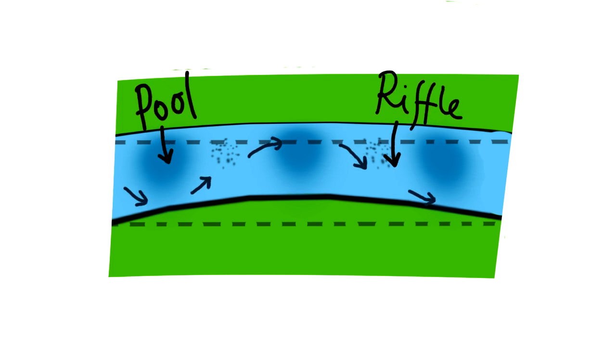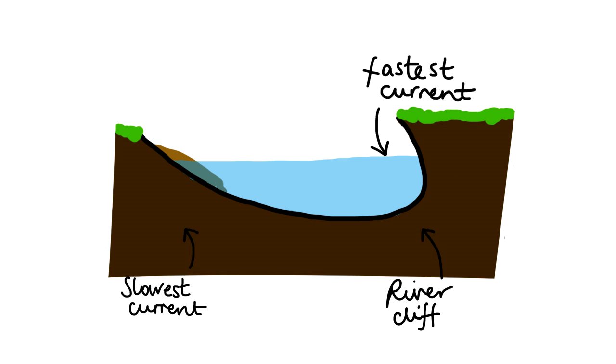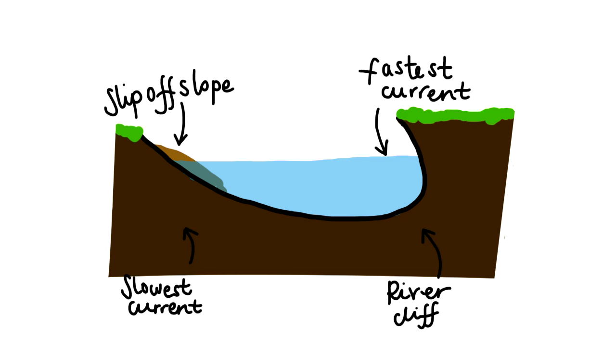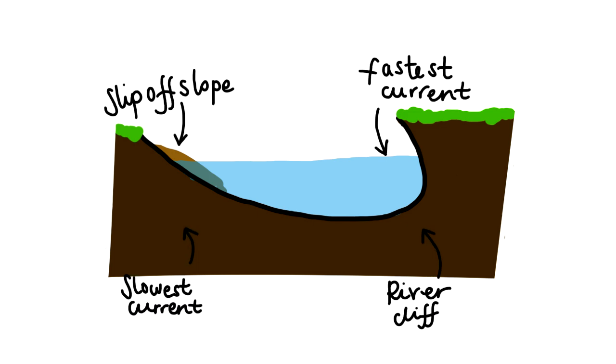On the outside bend, the river channel is very deep and concave, since this is where the water with the most energy flows, and lots of erosion by hydraulic action and abrasion takes place. Lateral erosion causes river cliffs to form on the outside bend. The flow of the river is much slower on the inside bend, so deposition forms a slip-off slope, composed of sand or shingle.